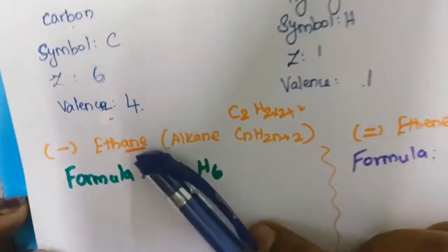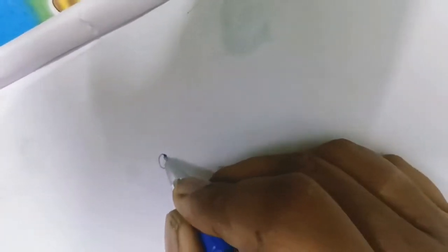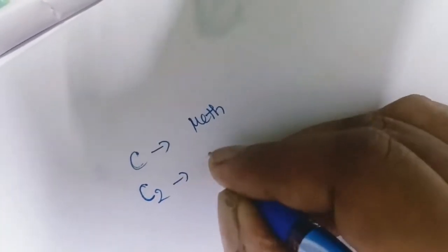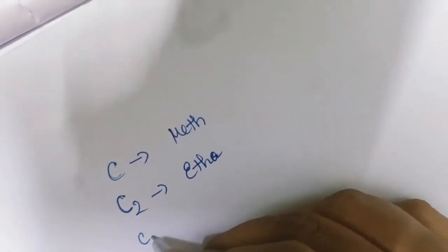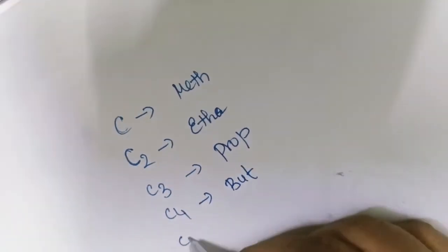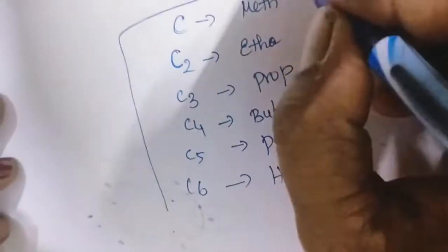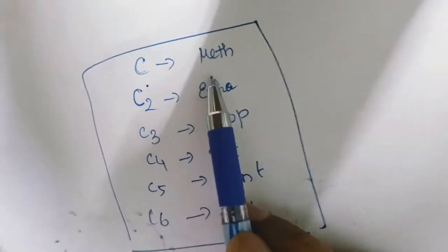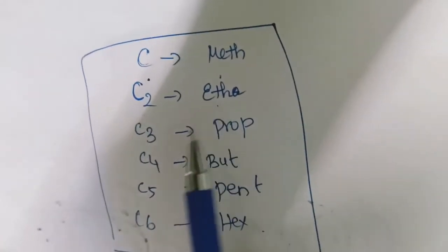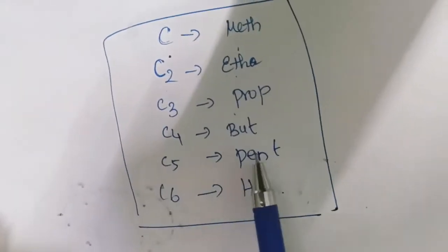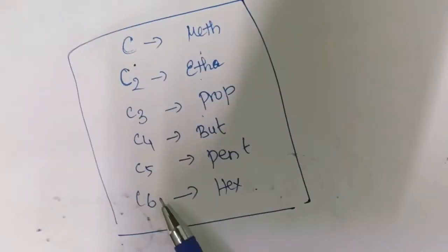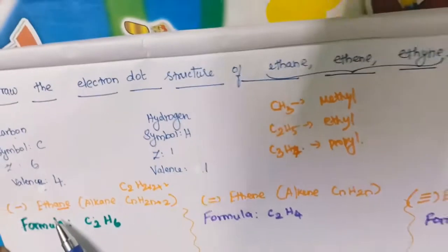Now we are going to see about ethane. We know that if the compound contains 1 carbon then it is called meth (M-E-T-H). If there are 2 carbons it is called eth (E-T-H). 3 carbons is called prop. 4 carbons is called but. 5 carbons is called pent. 6 carbons is called hex. You have to memorize this.